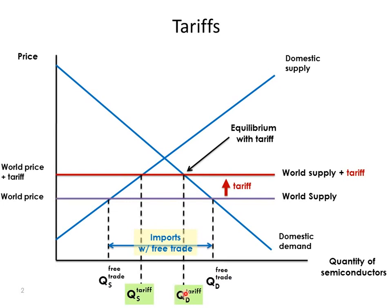We have less demanded because the price is higher. Domestic production increases, so our quantity of imports falls.